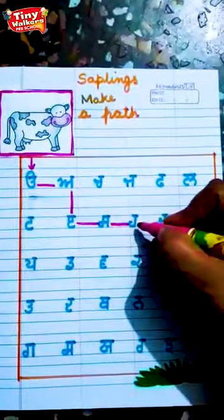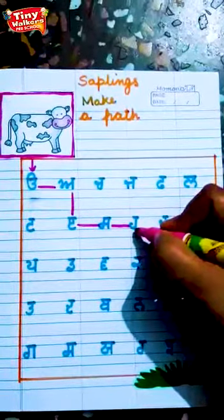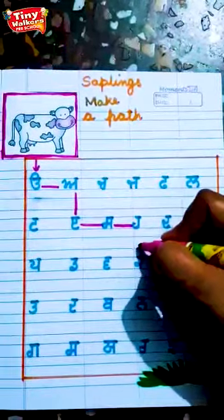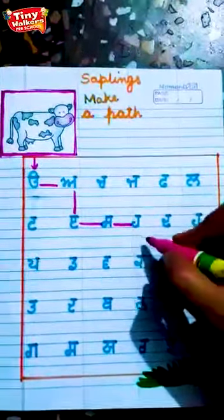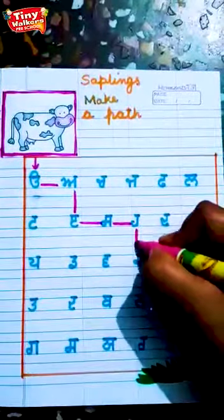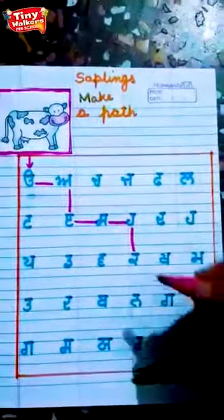Ura, eda, edi, sassah, kaka. This is correct. Let us make a path for the cow.